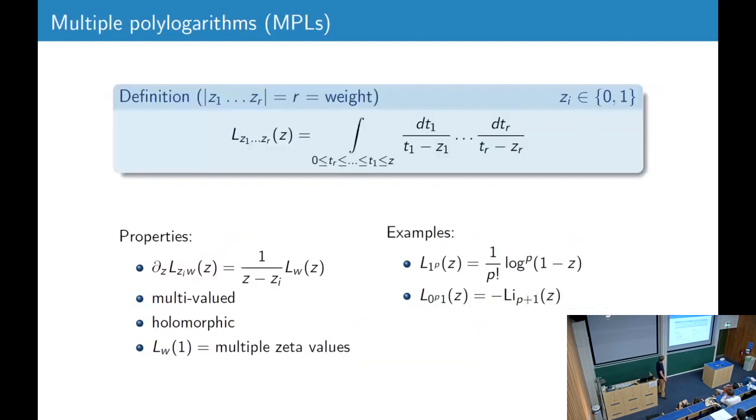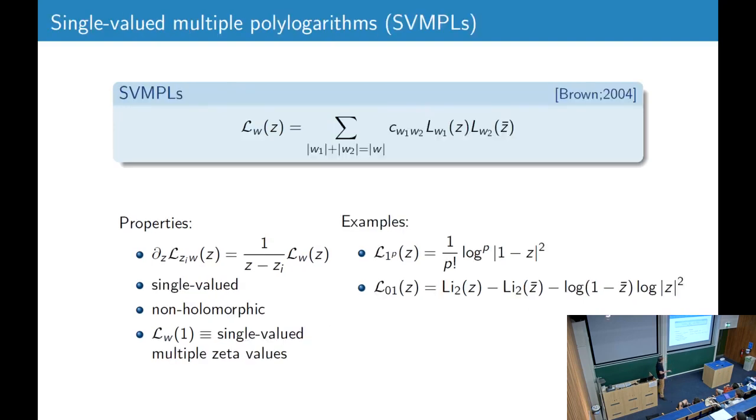So I think I will mostly skip this slide about polylogs. Multiple polylogs are the class of functions like logs and polylogs, and we allow singularities at 0, 1, infinity, where we inserted the operators. And these functions are of course multivalued, and single-valued multiple polylogs are just the single-valued versions of this that were introduced by Brown.